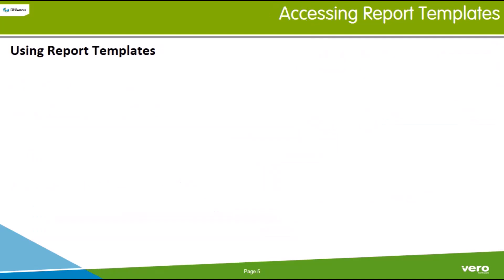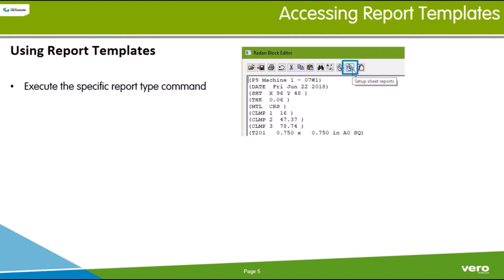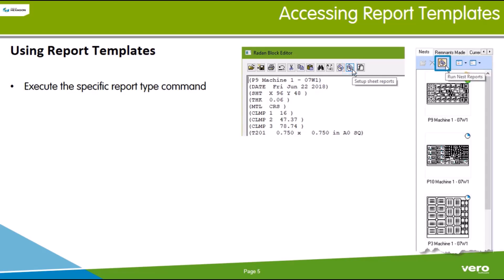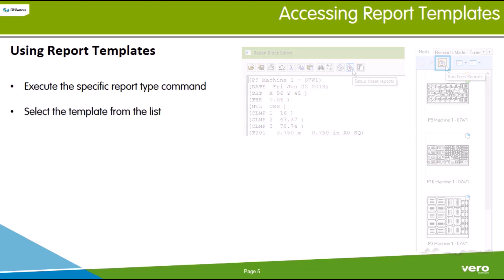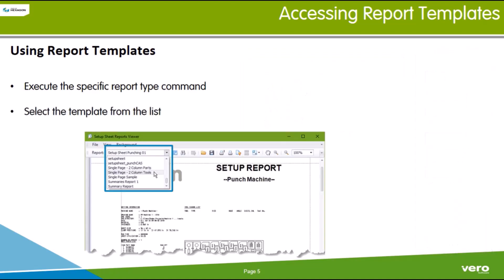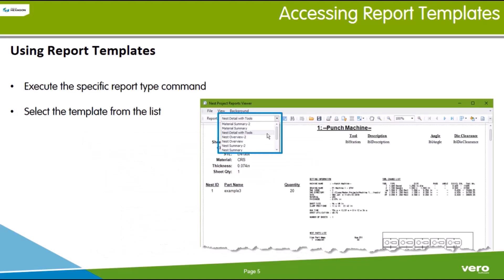To use templates, execute the report type. For setup sheet reports, launch from the block editor of a compiled NEST. For NEST reports, launch from the NEST reports icon at the top of the project NEST list. Then select the templates from the template list within the Setup Sheet reports viewer or the NEST project reports viewer.